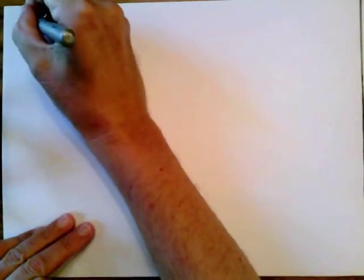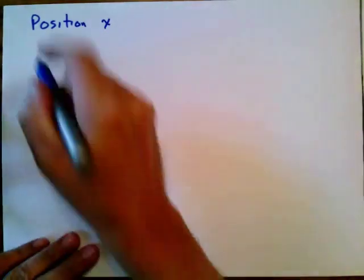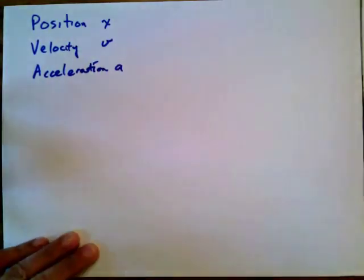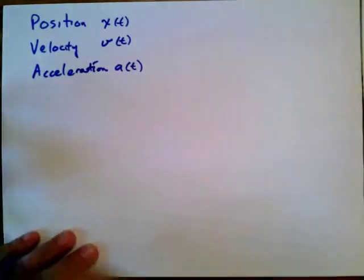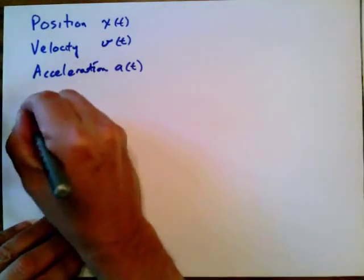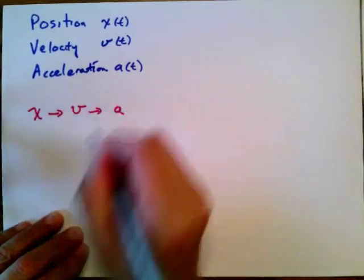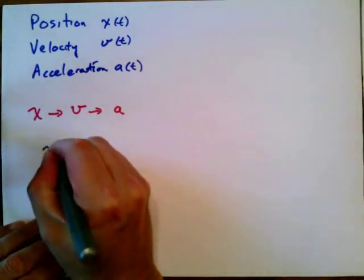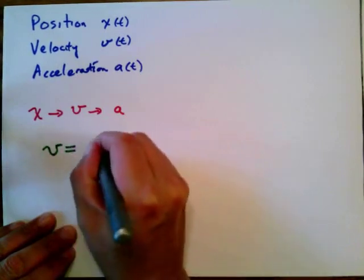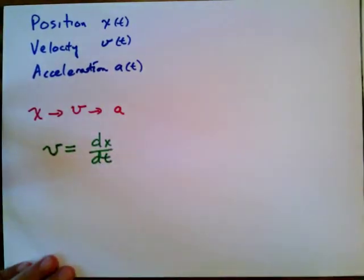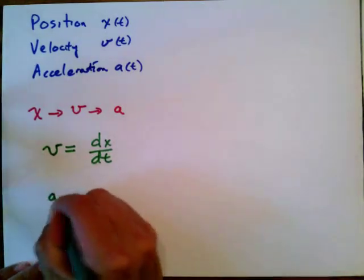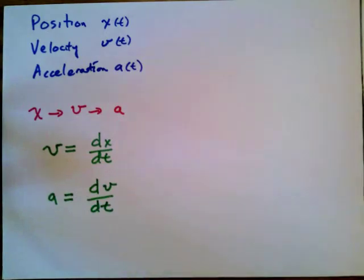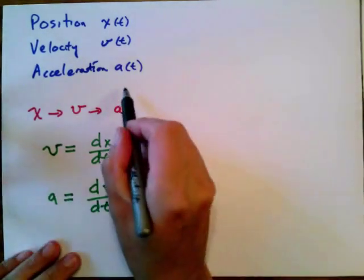To remind you about kinematics, we have the position, velocity, and acceleration — x, v, and a — which are variables or functions of time. Suppose we have a position x and we want to calculate the velocity, and then in turn calculate the acceleration. The velocity is equal to the time derivative of the position, dx/dt. Given the position as a function of time we can calculate the velocity by taking a derivative. Likewise, acceleration is dv/dt — given the velocity as a function of time we can calculate the acceleration by taking a derivative.